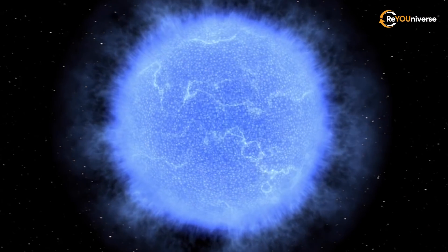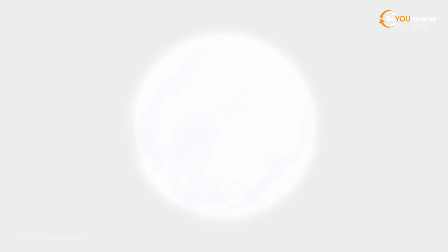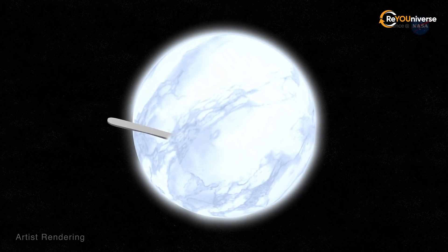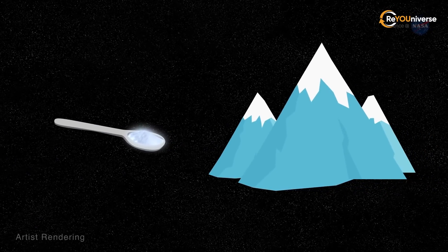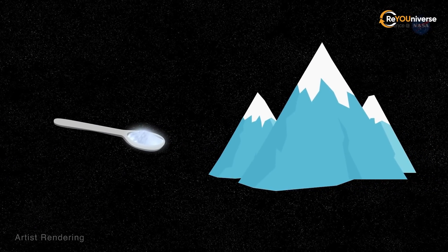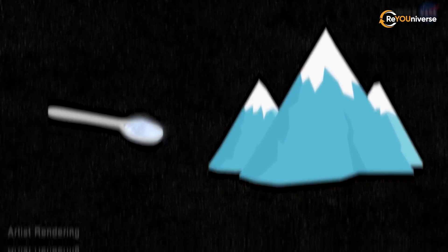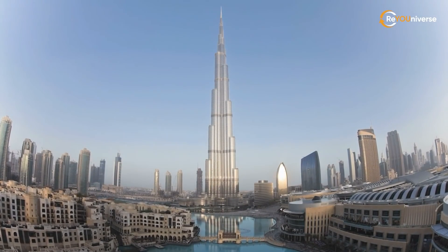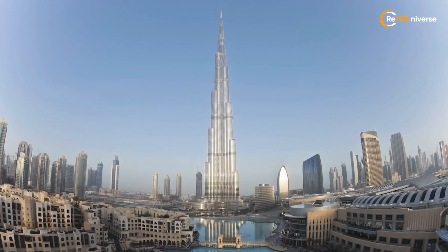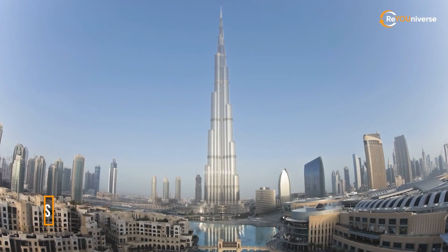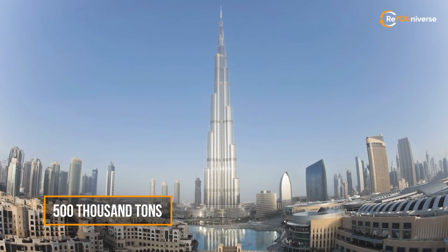Popular science gives the following analogy: a spoon of such a substance in a stable state would weigh hundreds of millions of tons on Earth. To put this into perspective, Burj Khalifa, the tallest skyscraper in the world, weighs only 500,000 tons.